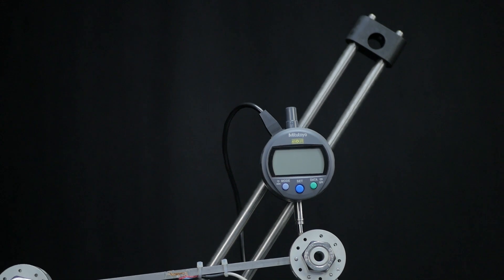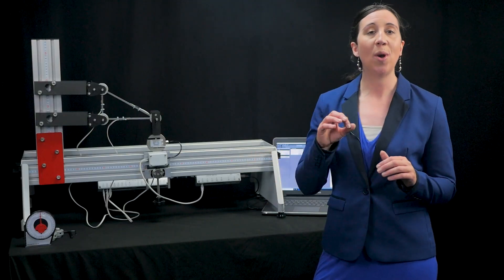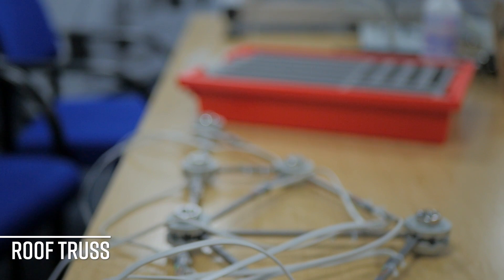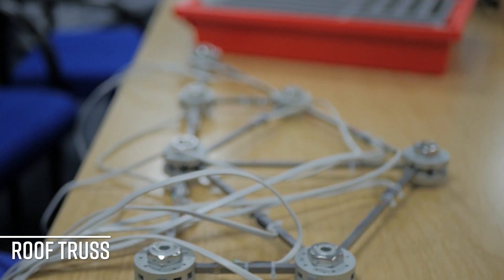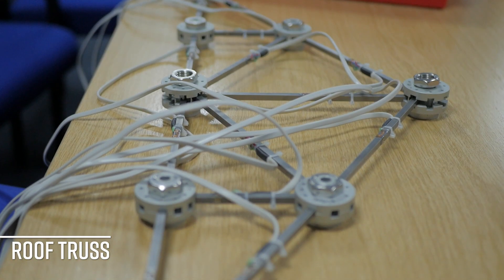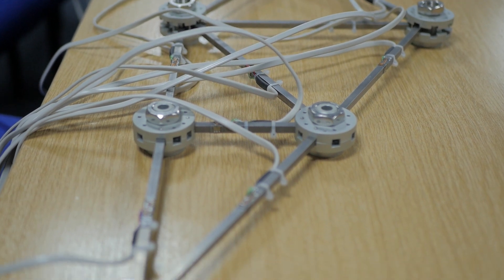The last experiment is the roof truss, where you can illustrate and confirm the principle of superposition. You can do this with both a vertical load and a horizontal load, as well as combining these loads.